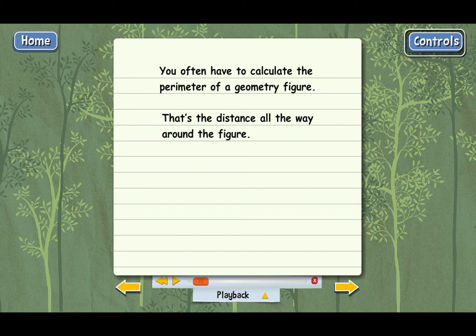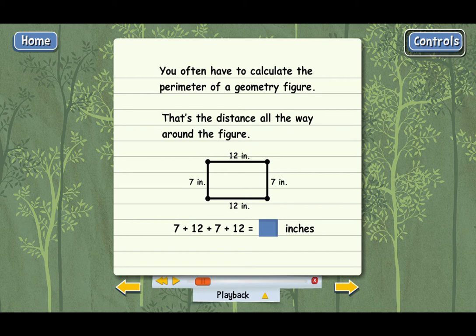A simple example would be the perimeter of a rectangle. The side lengths are labeled. You can see. Why don't you go ahead and add them all up? Good. So the perimeter of this rectangle is 38 inches. That's all you have to do to calculate a perimeter. It's pretty easy.